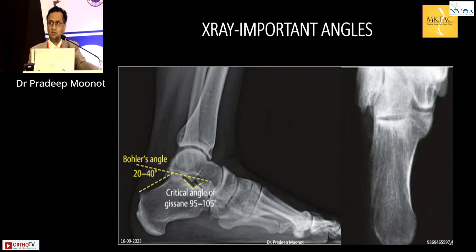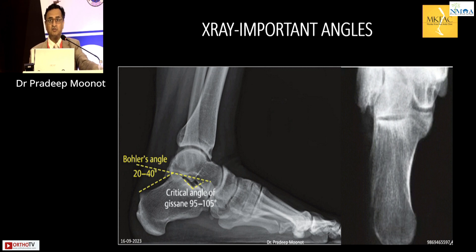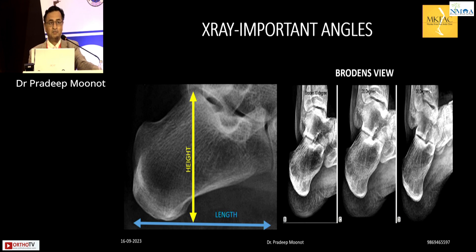The key radiographic angles to know are: Böhler's angle — the angle between the articular margins versus the posterior tuberosity, which should be 20 to 40 degrees — and Gissane's angle, which should be obtuse. Use the axial views to check the width of the calcaneum. Also critically assess the height and length of the calcaneum and hindfoot, as these are very important.